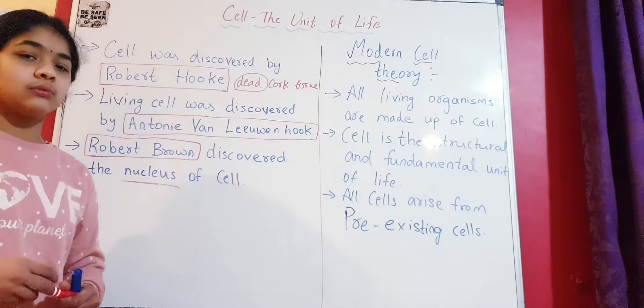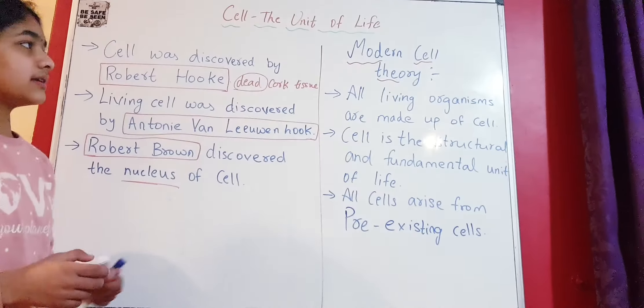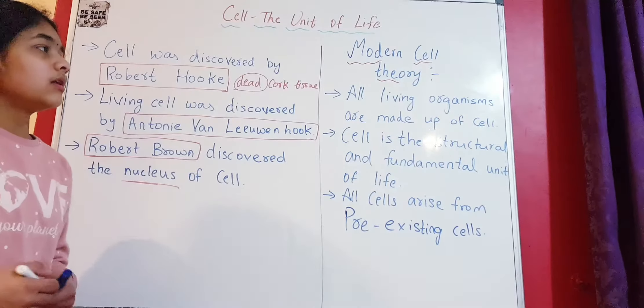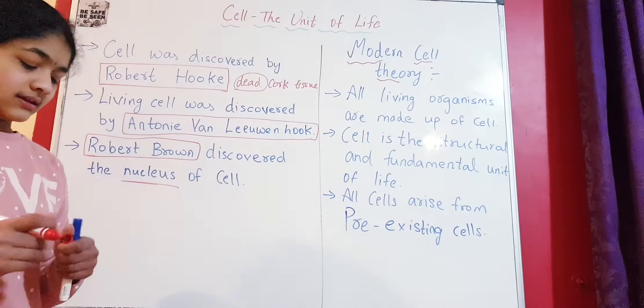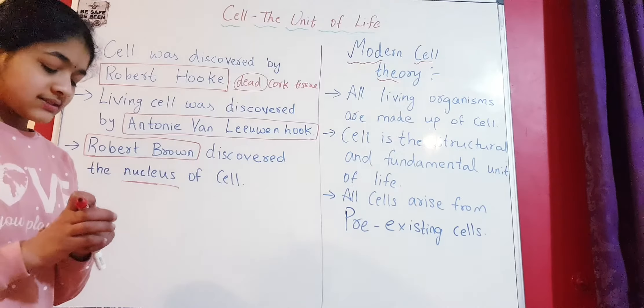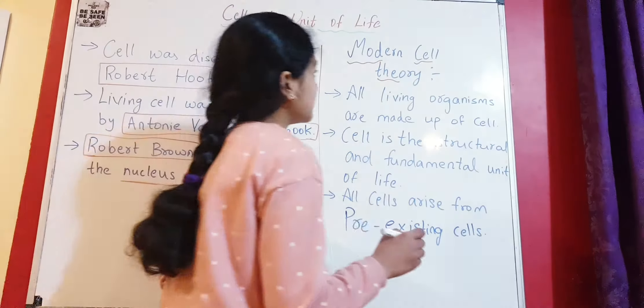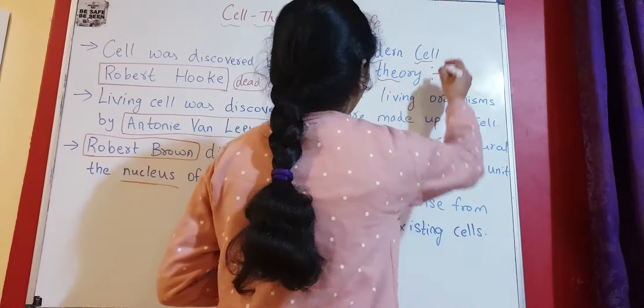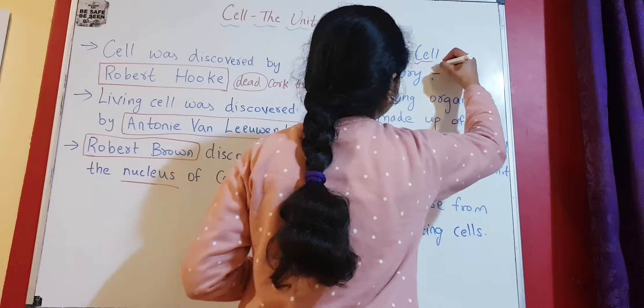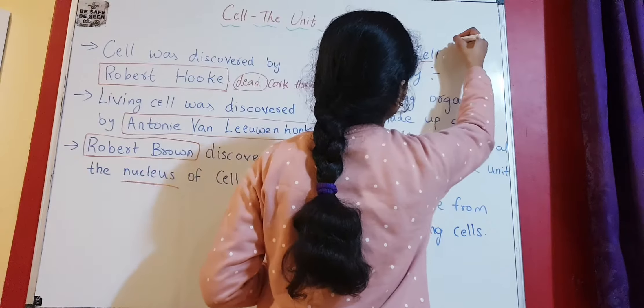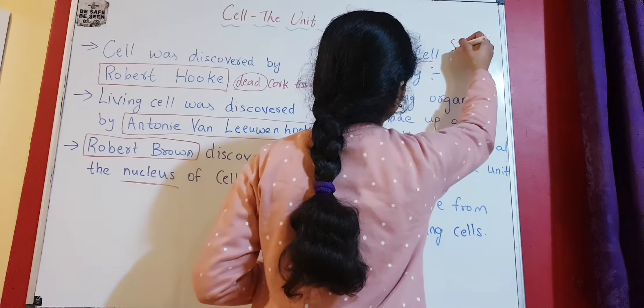Now there is a theory called the Modern Cell Theory. The modern cell theory was given by three scientists: Schleiden, Schwann, and later Virchow.